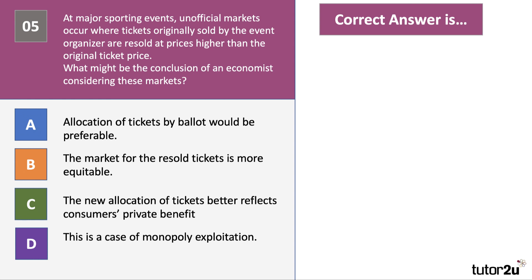So this is about resale markets, things like touting and things where perhaps they've originally sold the tickets at too cheap a price and there's a pent up demand for tickets, big cup finals and things, big sporting events. The right answer here is C. Once you resell, you're going to bring into the market those people for whom there is a genuine willingness to pay, people with a high marginal or private benefit. So the new allocation of tickets better reflects that. B is wrong. Often the market for resale tickets is less equitable because tickets only go to those people with the incomes, with the resources to pay for them.